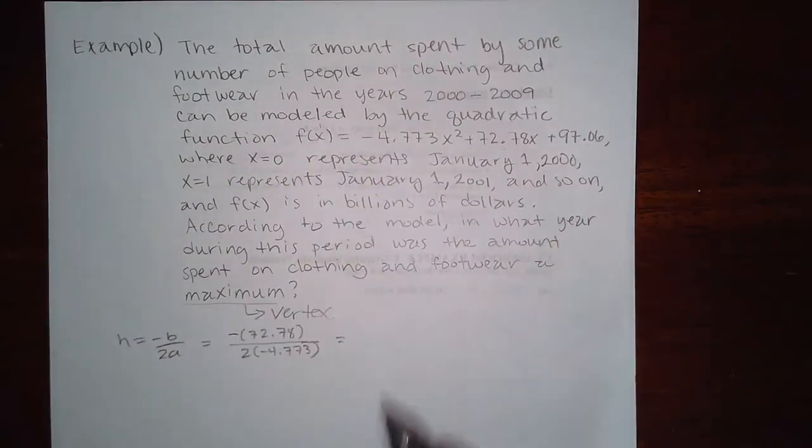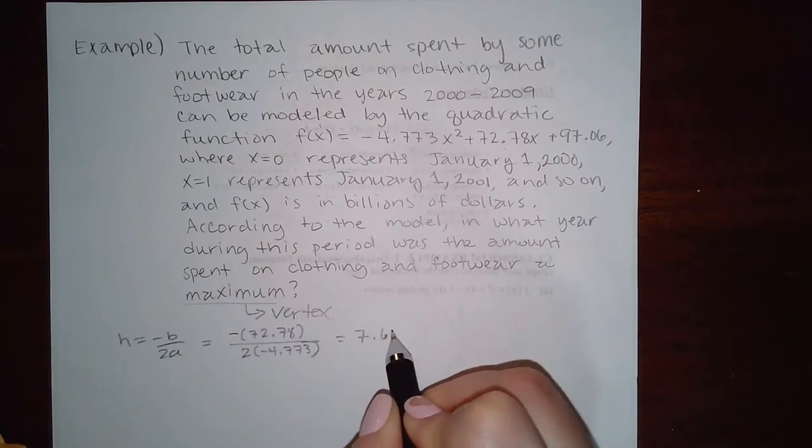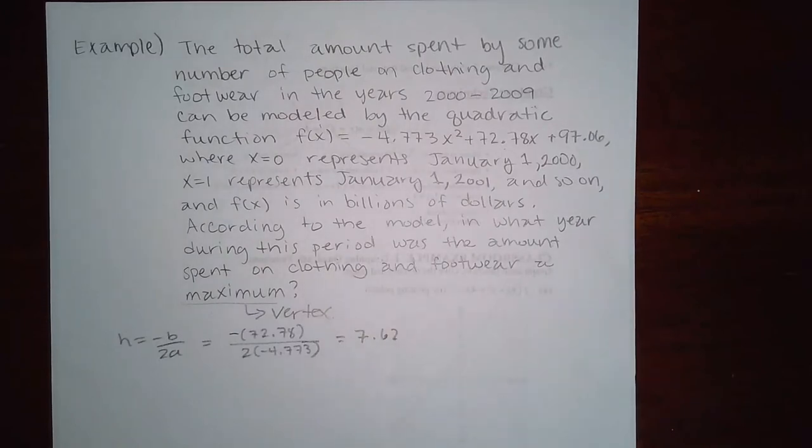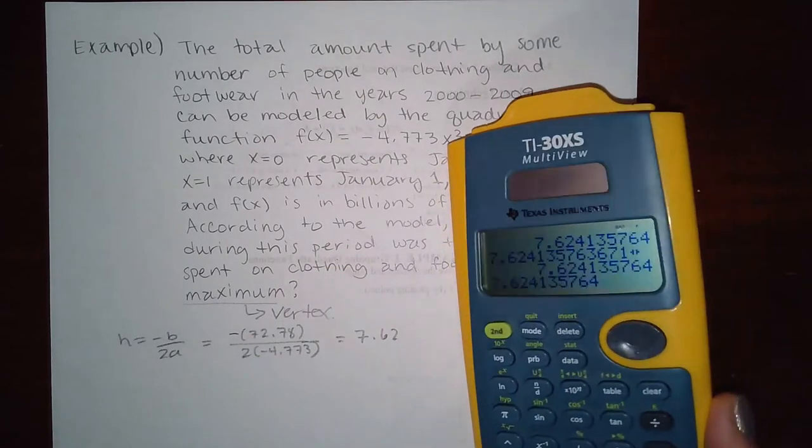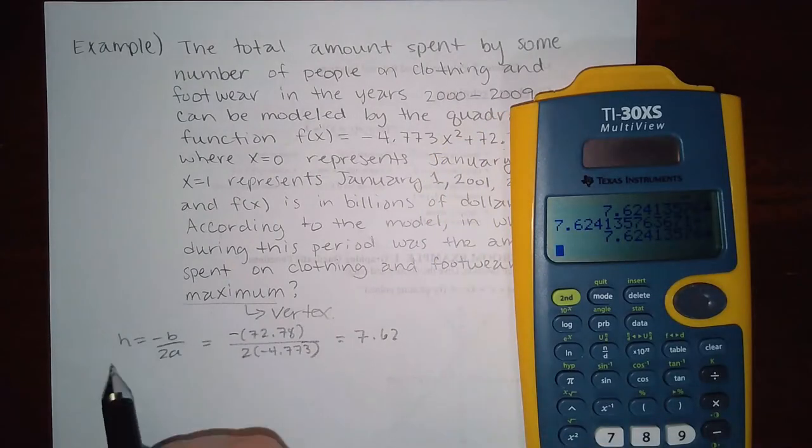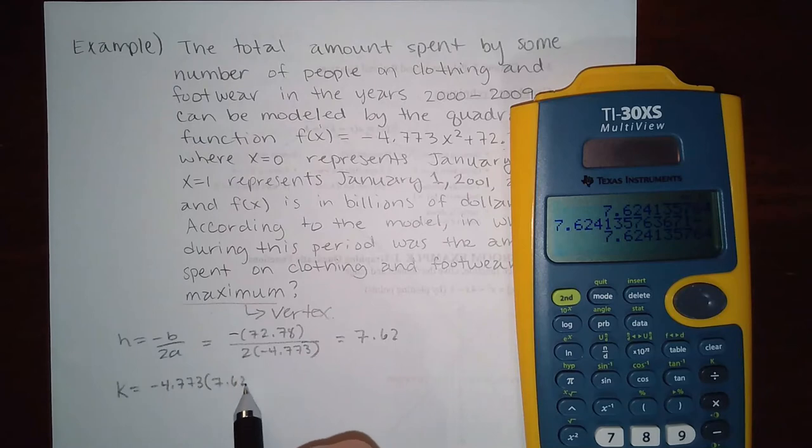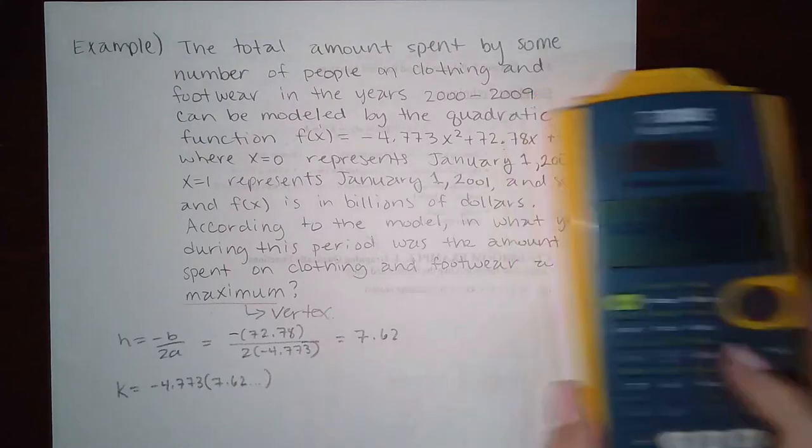I get, and I round that, I'm gonna have to round that, I get 7.62. But you don't want to use the rounded version in your calculator when you're typing in the number. Notice that that was the last thing that I got in my calculator, so I do have to plug that in. So I know k is going to be negative 4.773 times that number.